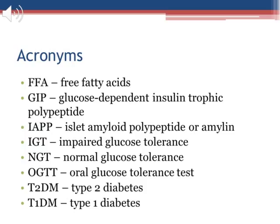During my presentation, I am going to be using several acronyms, as you can see on the slide. FFA means free fatty acids. GIP is glucose-dependent insulinotropic polypeptide. IAPP is islet amyloid polypeptide, or amylin. IGT is impaired glucose tolerance. NGT is normal glucose tolerance. OGTT is oral glucose tolerance test.